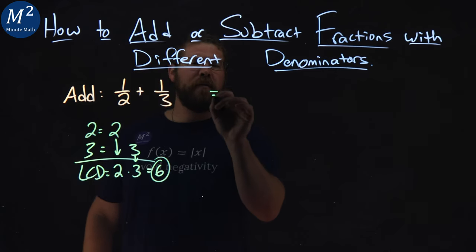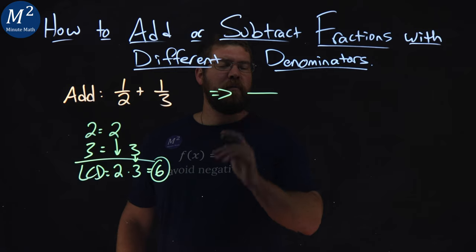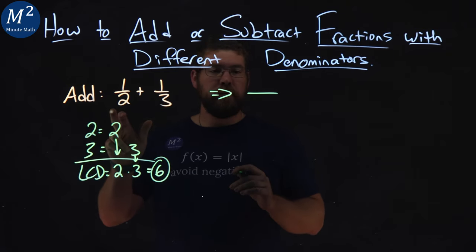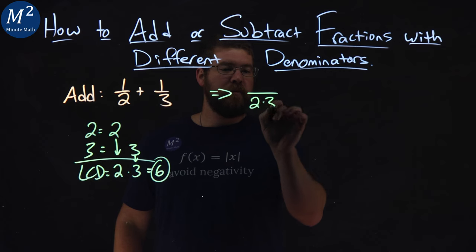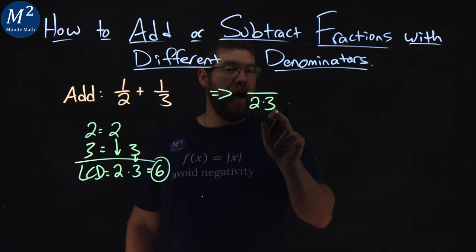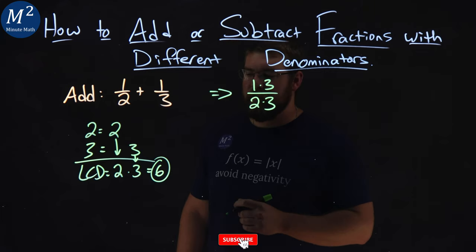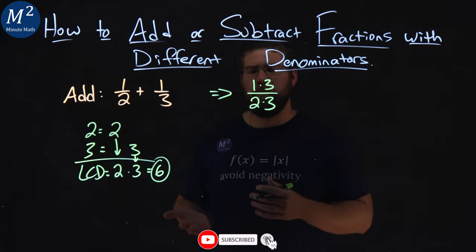So we can rewrite this fraction here. We have to write an equivalent fraction with the least common denominator. 2 can be 2 times 3. If we multiply 3 in the denominator, 3 in the numerator. Right now it's a basic fraction, but as we move on, we'll get to more complex ones.